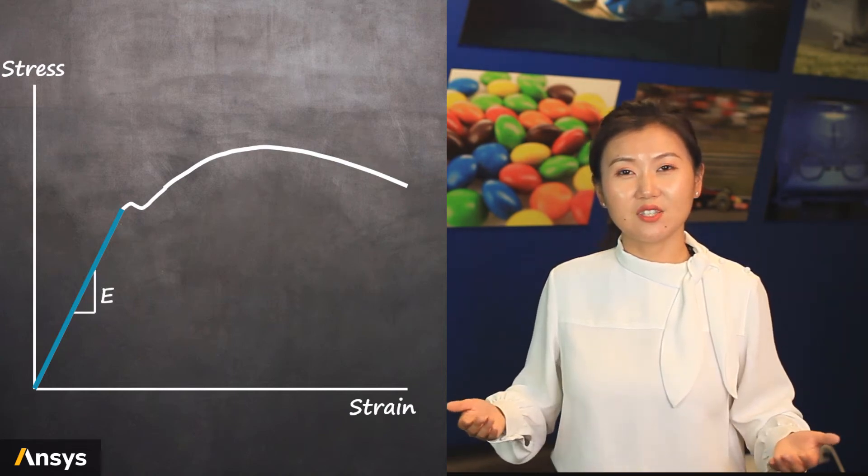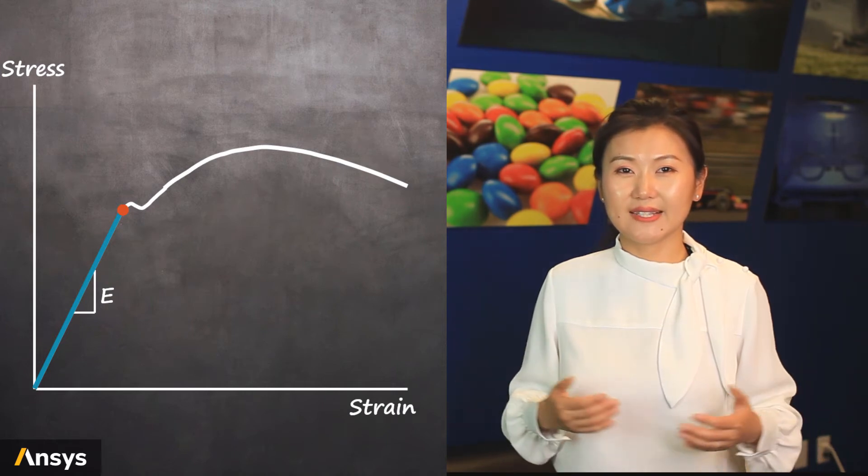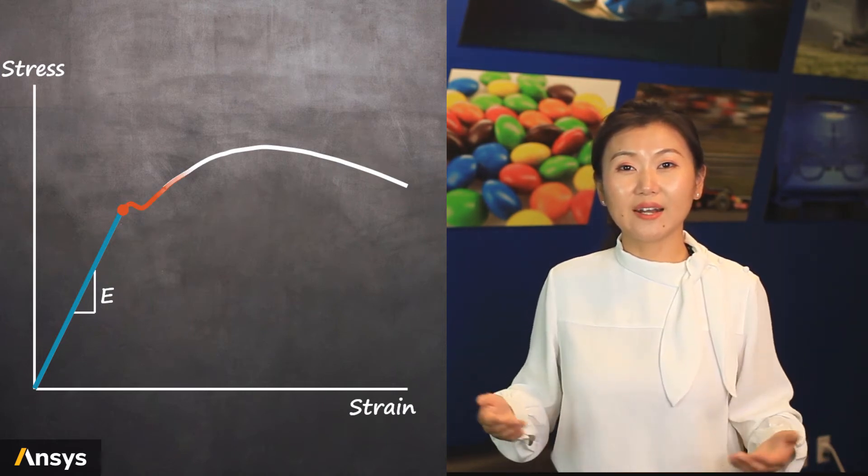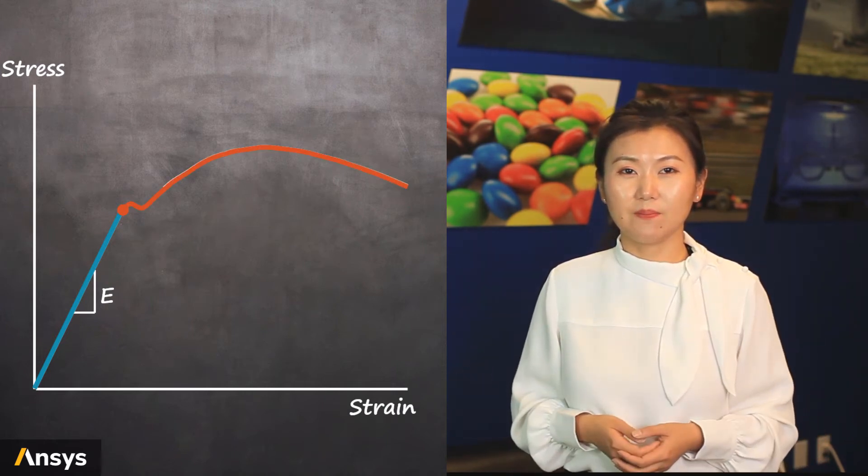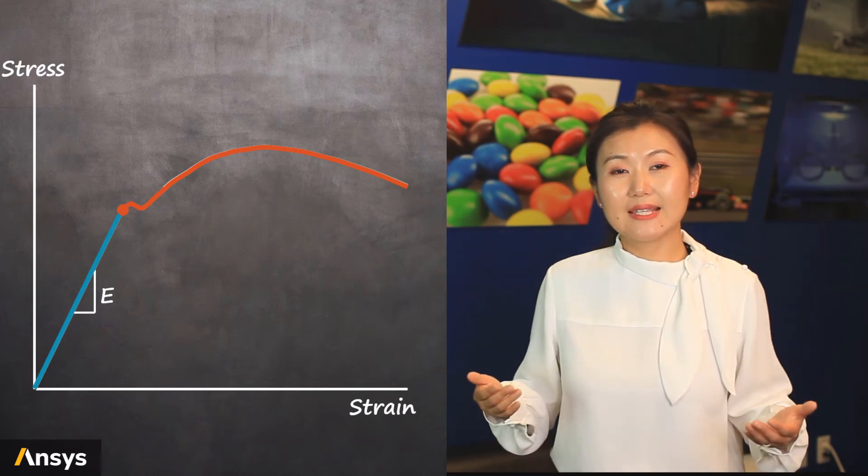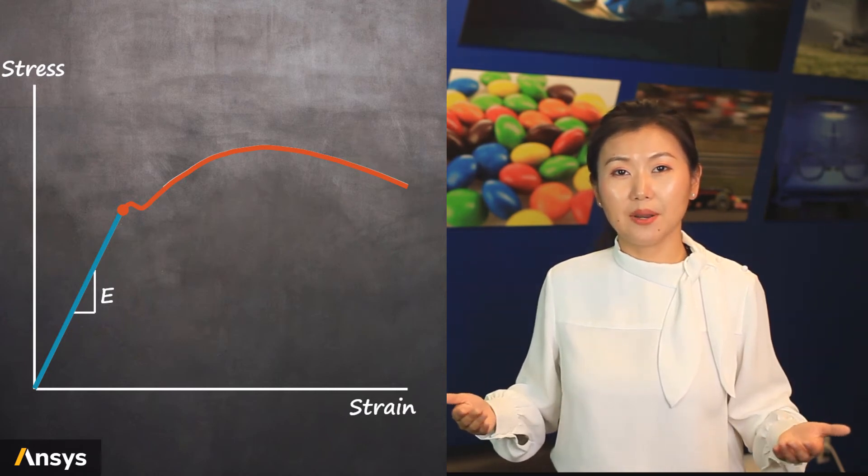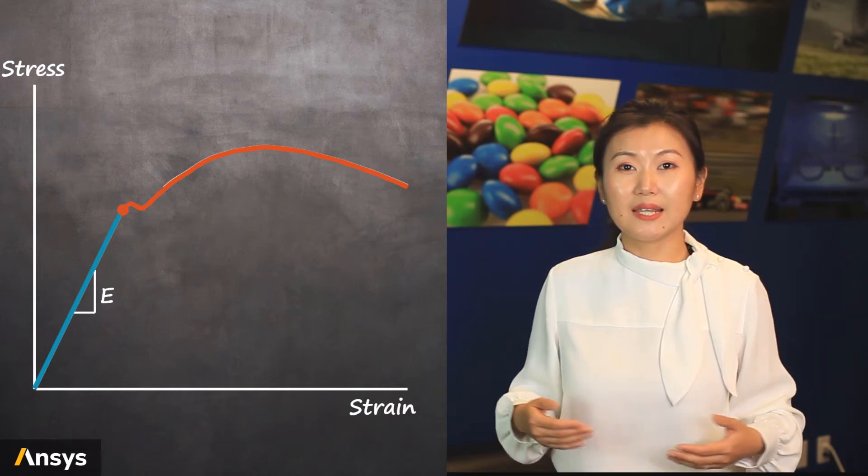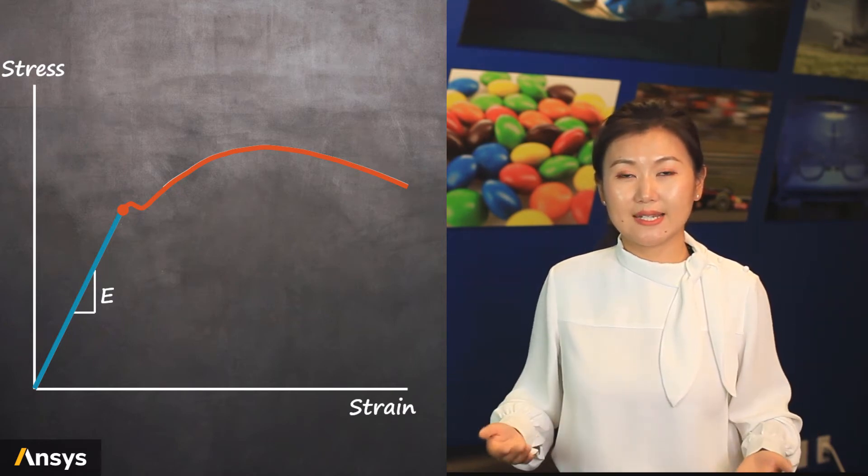After reaching a certain point, such linear relationship does not exist anymore. We're looking at a curve with change in tangent. And for metal materials, the stiffness always decreases compared to initial linear stiffness, meaning that the strength of the material is disgraced.